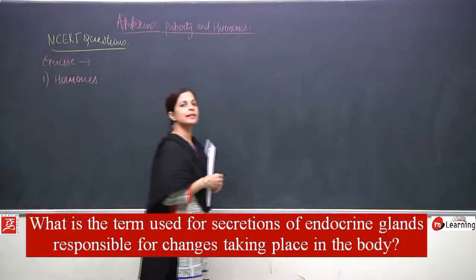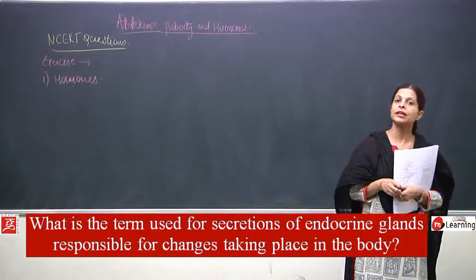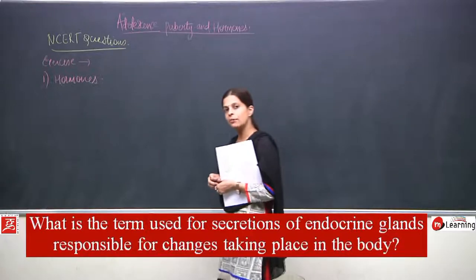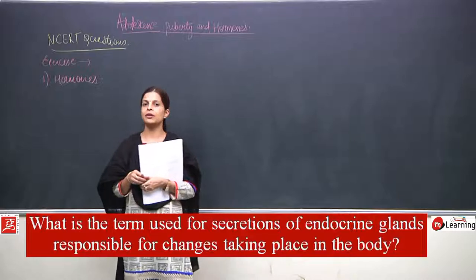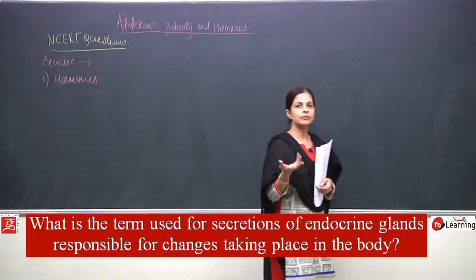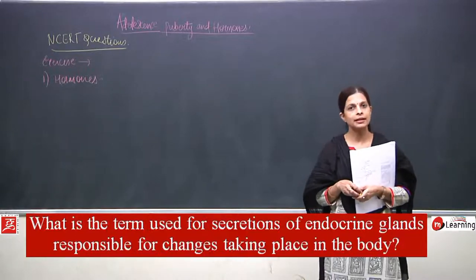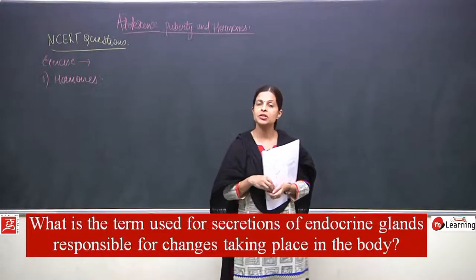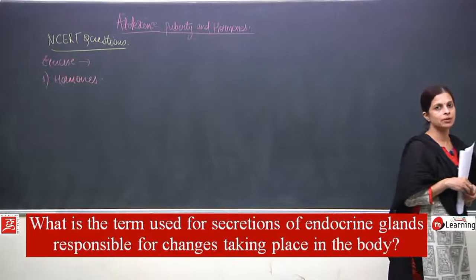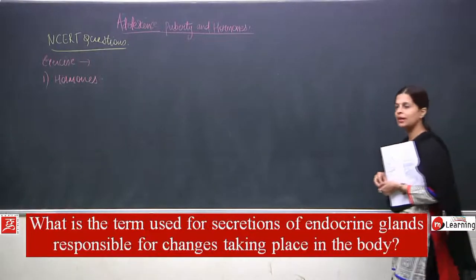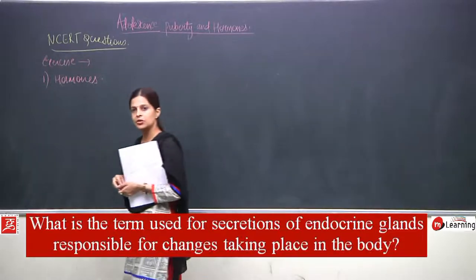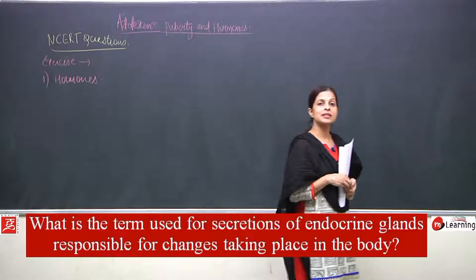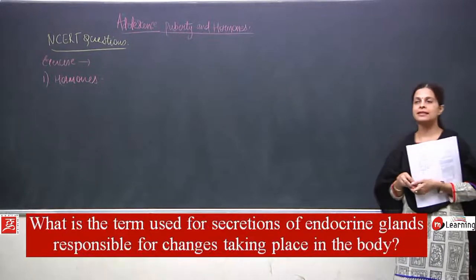So the chemical substance secreted from the endocrine glands is known as hormones. Hormones are chemical substances secreted from the endocrine glands. Endocrine glands are ductless glands — they do not have ducts. Hormones are released directly into the blood and reach to the target area. So the answer to question number one is: hormones.